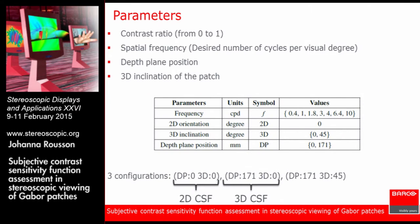We performed all experiments for seven different spatial frequencies, ranging from 0.4 to 10 cycles per degree. We studied a vertically oriented Gabor patch with two 3D inclinations — either 0 degrees or 45 degrees — and two depth planes: either 0 (the display plane) or 171 mm behind the display plane. This gave us three configurations: the 2D CSF configuration (depth plane 0, inclination 0), the 3D CSF configuration (depth plane behind display, inclination 0), and an overt 3D inclination configuration.